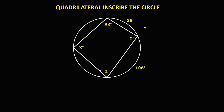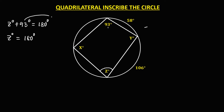For this given, to solve for angle Z: since the sum of these two opposite angles is 180 degrees, we have angle Z plus 93 degrees equals 180 degrees. Transposing the positive 93 degrees, it becomes negative 93 degrees. Therefore, angle Z is equal to 180 minus 93, which is 87 degrees.